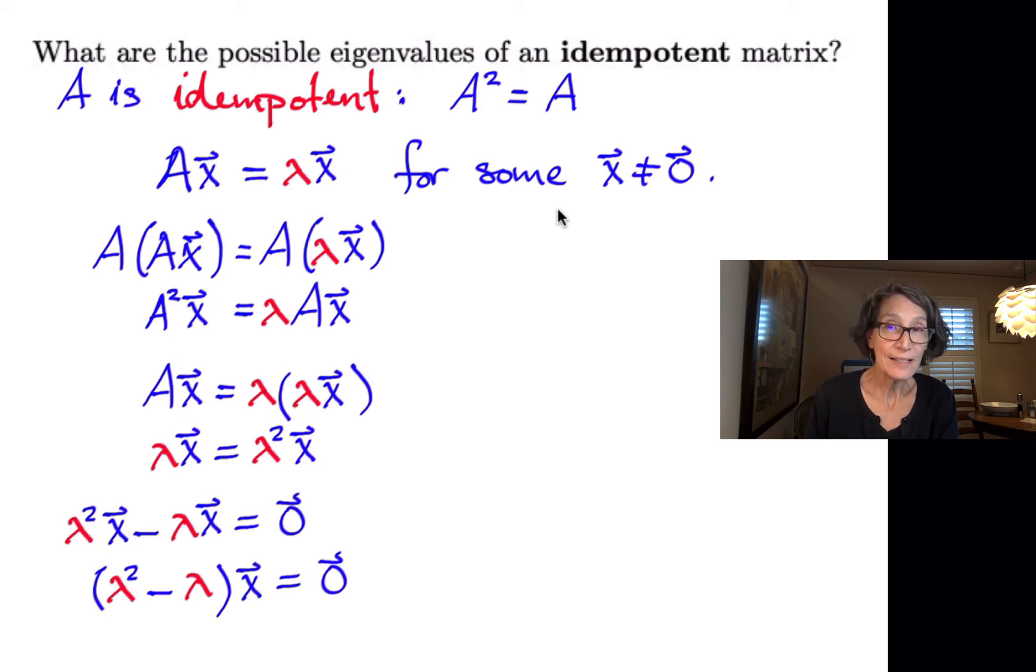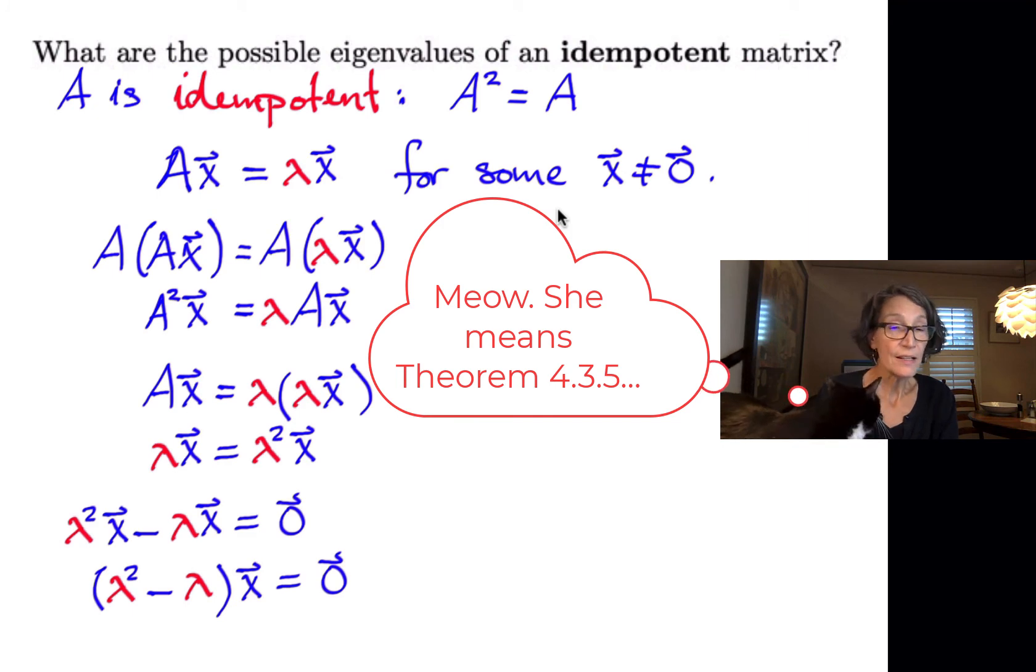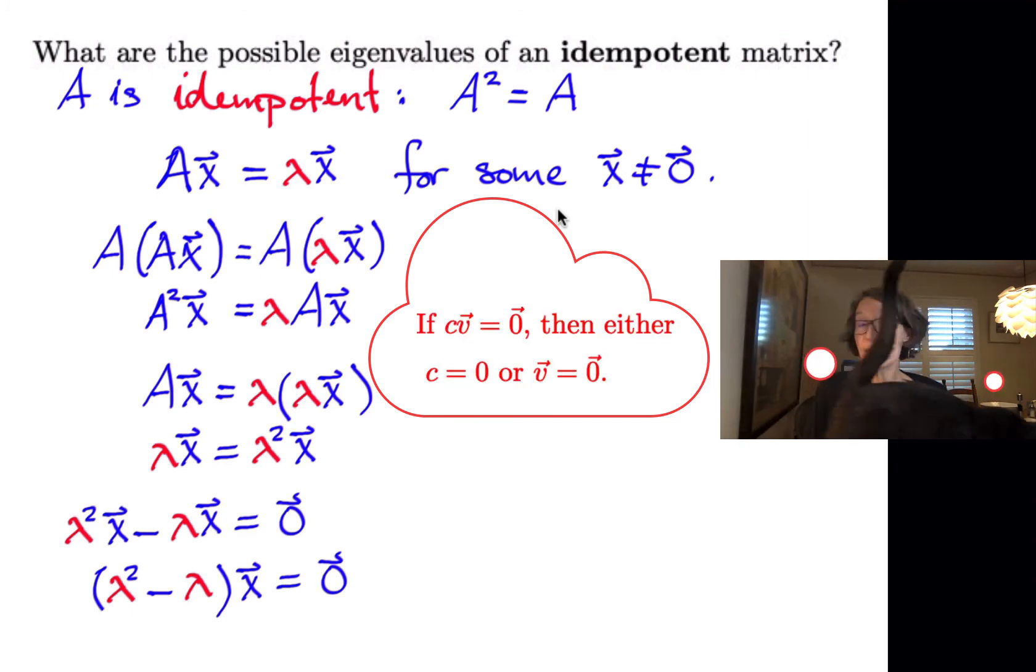Okay, so now we have a scalar lambda squared minus lambda times a non-zero vector X, and it's equal to the zero vector. Now, we had a theorem a while ago that said when you have a scalar times a vector, and that product is equal to the zero vector, then either the scalar is zero or the vector is the zero vector.